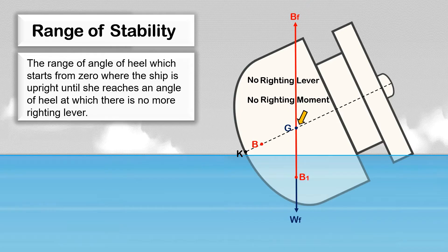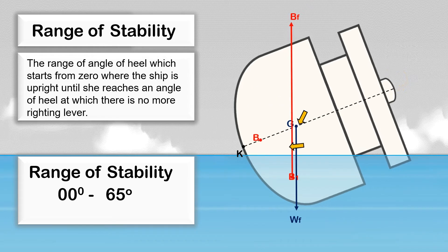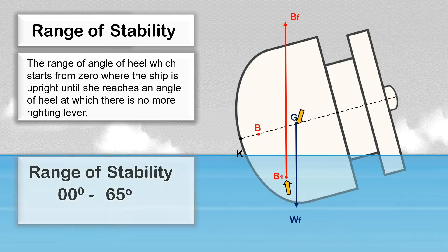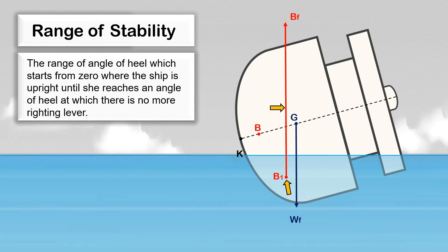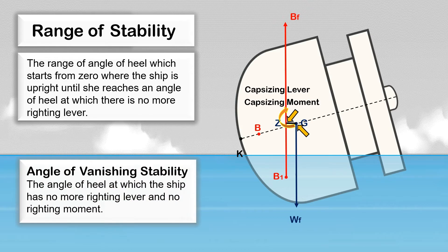In this case, let us assume that at an angle of heel of 65 degrees, no more righting lever exists, so the range of stability is from zero to 65 degrees. If the ship is heeled further, the buoyancy force acting on the low side of the ship will be transferred to the high side, creating a capsizing lever instead of a righting lever. Thus, a capsizing moment will exist, pivoting around the ship's center of gravity G, which will tend to capsize the ship. This angle of heel where a capsizing moment exists is called the angle of vanishing stability.